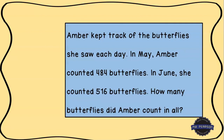The first thing we want to do is circle the numbers we have. The first number I see as I read through it is 484 — so we have 484 butterflies. Then in the next line it says she counted 516 butterflies.